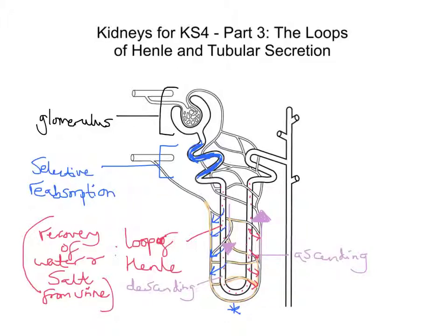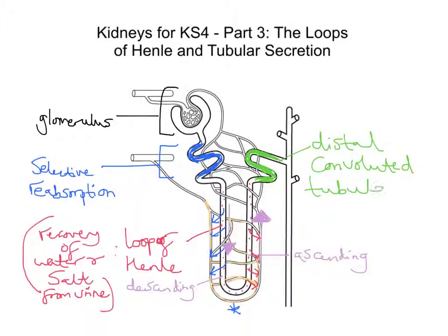Following the loop of Henle — from the descending limb, down at the bottom curve, up the ascending limb — we then get to the distal convoluted tubule. The proximal convoluted tubule was on the right side, and now in green we have the distal convoluted tubule. It's here where we get the process of tubular secretion.